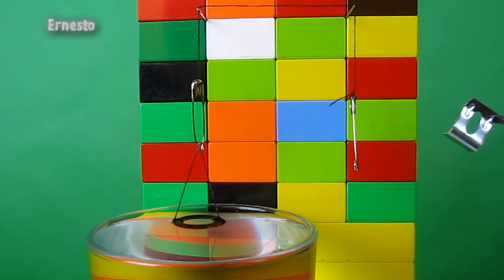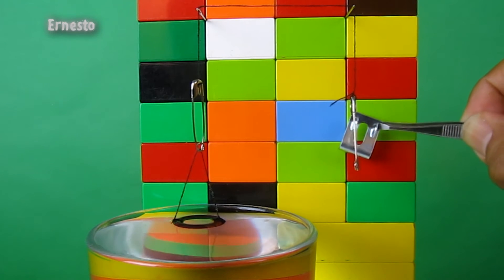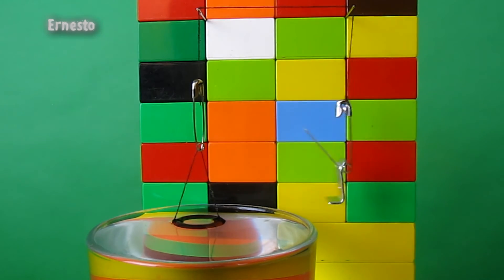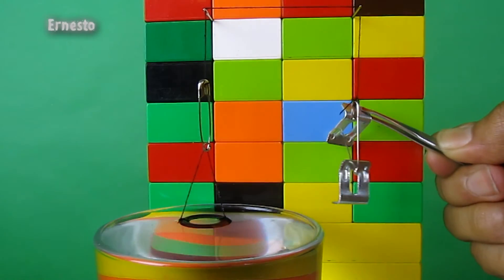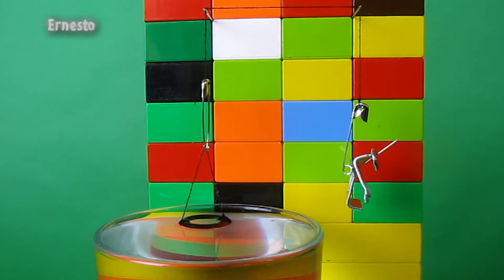Now, instead of pulling the thread with your hand, let's hang something of known weight. It wasn't enough to break the water surface. Let's put a bit more weight and we can keep adding on and on.